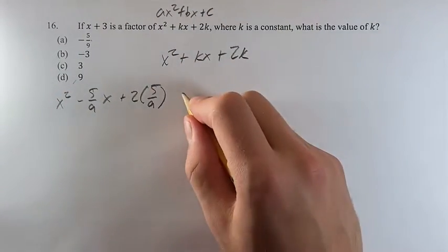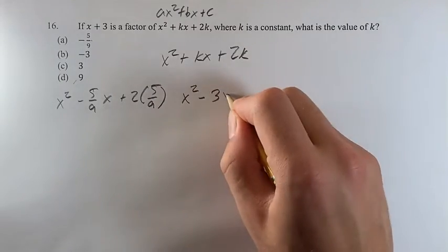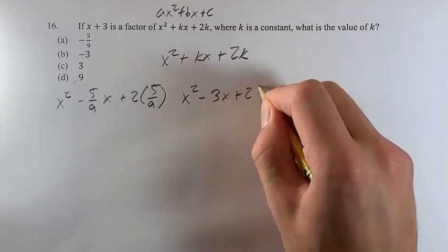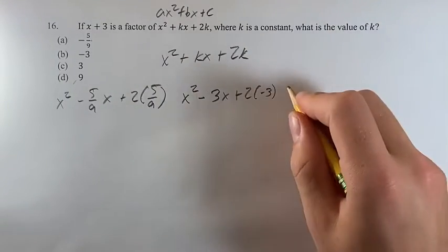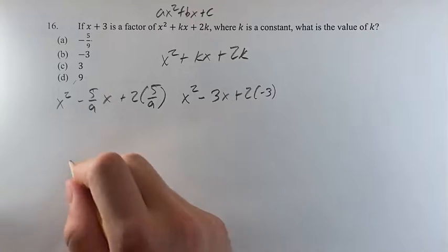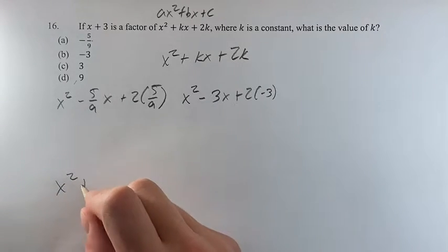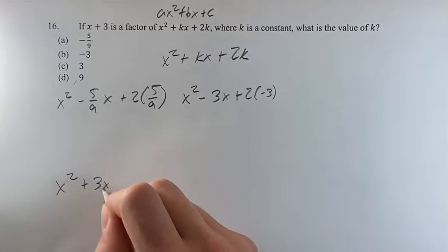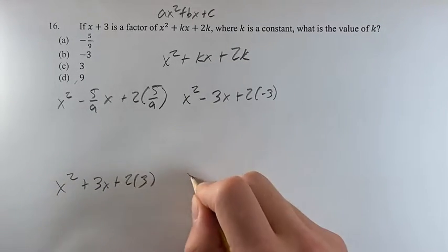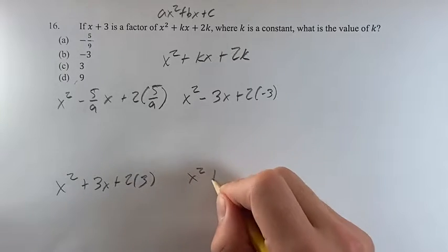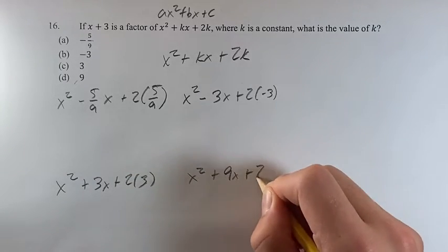So you have this: x squared minus 3x plus 2 times negative 3, and then down here — space it out a little bit — x squared plus 3x plus 2 times 3, and x squared plus 9x plus 2 times 9.